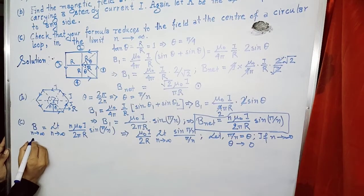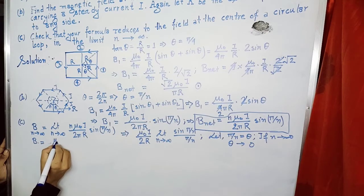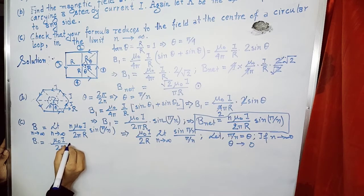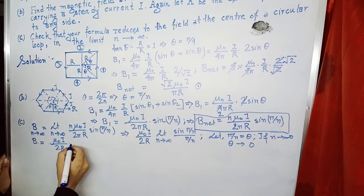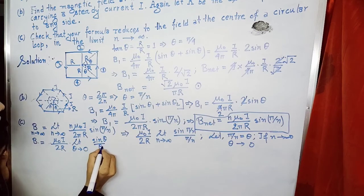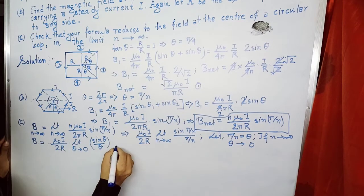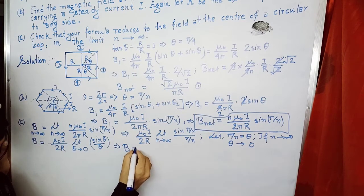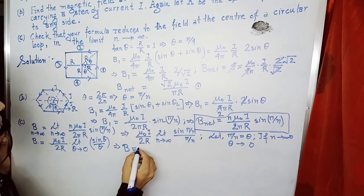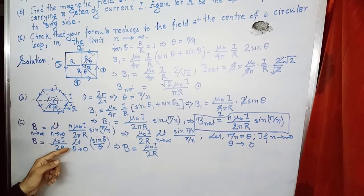Therefore, B_net equals μ₀I/(2R) multiplied by the limit as θ→0 of sin θ / θ, which equals 1. So the magnetic field at the center of the loop becomes B = μ₀I/(2R), since the limit of sin θ / θ as θ → 0 equals 1.